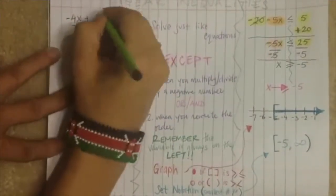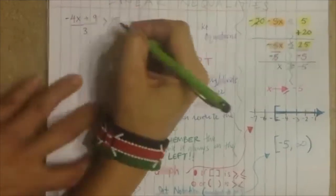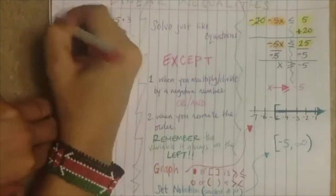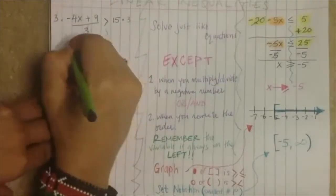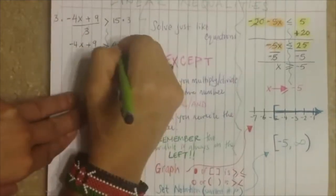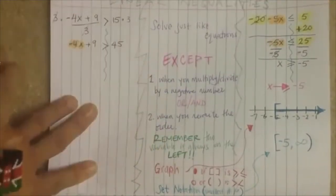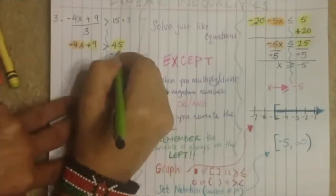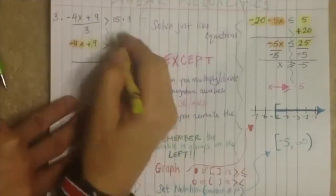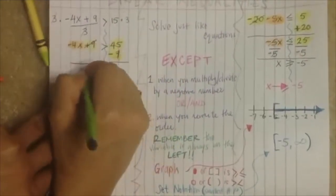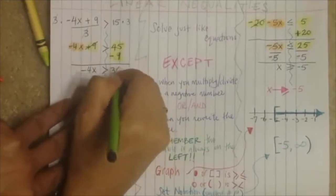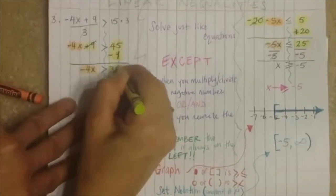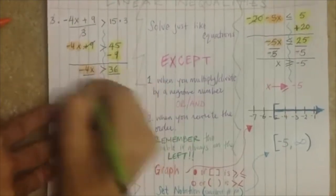Go ahead and write this down: negative 4x plus 9, all over 3, is greater than 15. I'm going to multiply both sides by 3, which crosses out the denominator, giving me negative 4x plus 9 is greater than 45. I color variables orange and numbers yellow, then subtract 9 from both sides to get negative 4x is greater than 36.